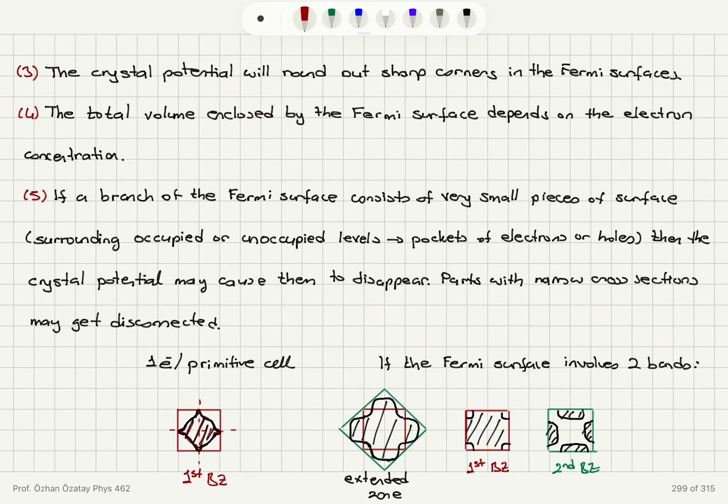The total volume enclosed by the Fermi surface depends on the electron concentration. The empty space we have in the first Brillouin zone in the reduced zone scheme will tell us the proportion of the states that are not yet occupied by electrons.